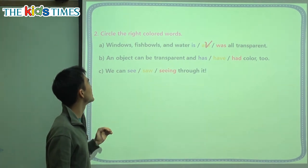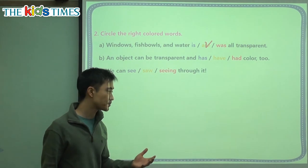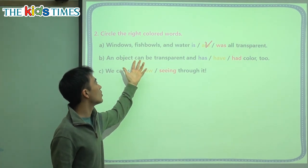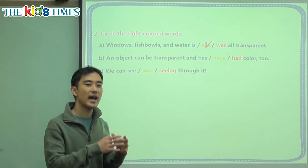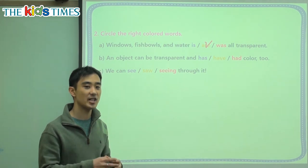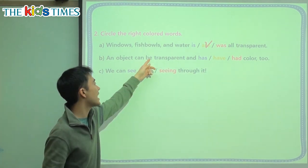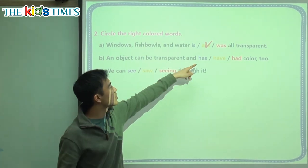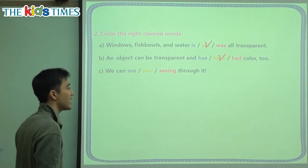B, an object can be transparent and blank color too. So we have this helping word, a helping verb, can. So when we use this word can, the next verb or the next action word has to be an original verb. That means we cannot change it. We cannot say can is or can are. We can't do that. Just can be. That's the original form of is and are. So same thing, we have to use the original verb here, something that we don't change. And that is have.